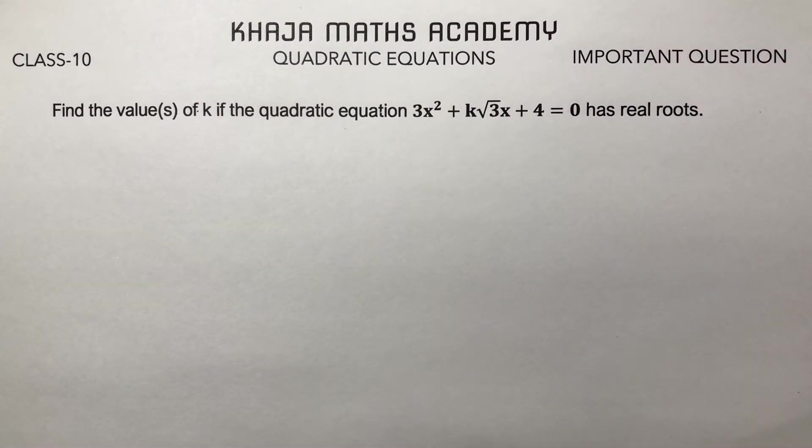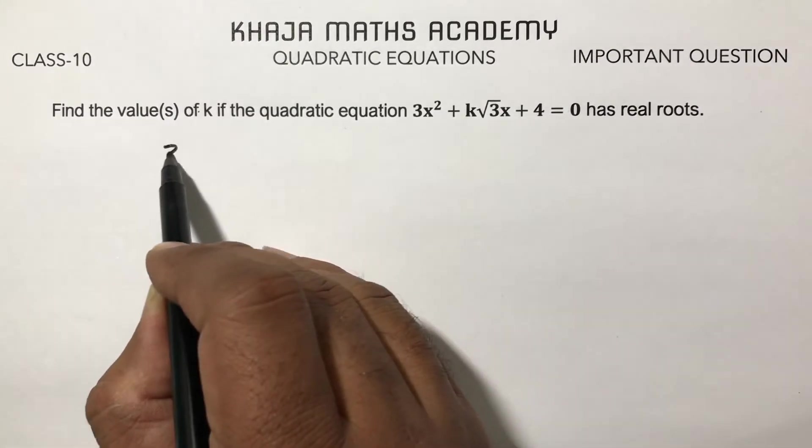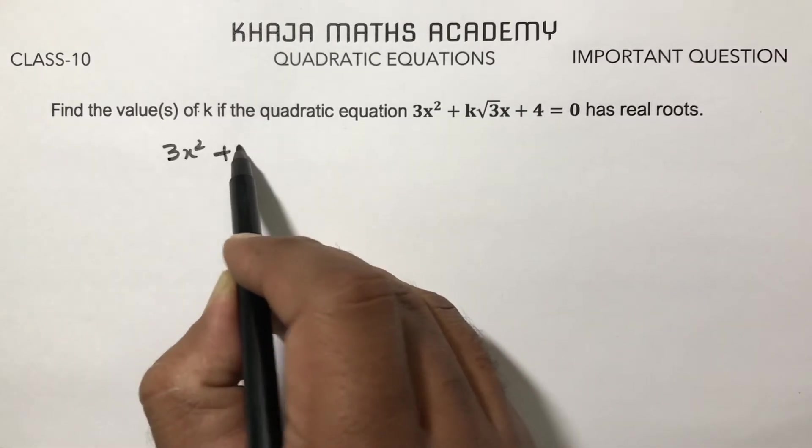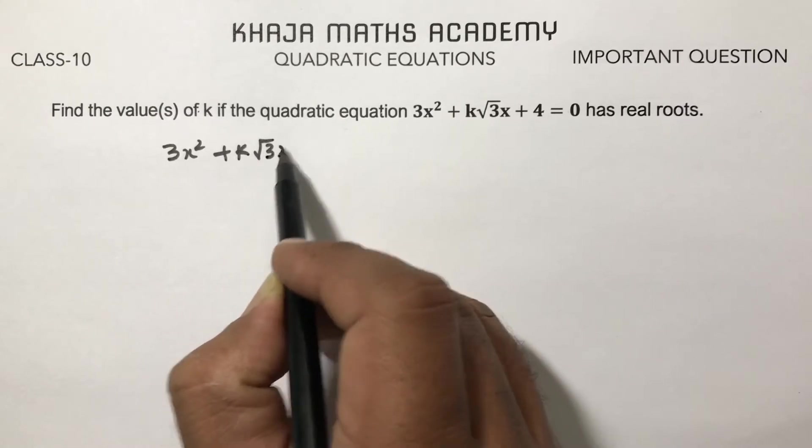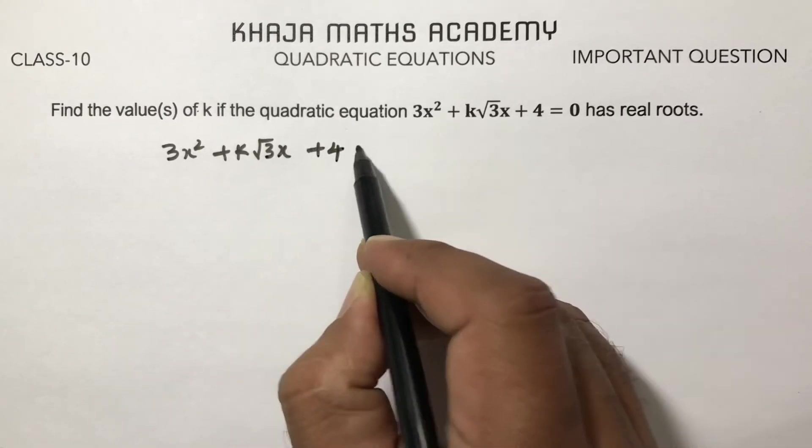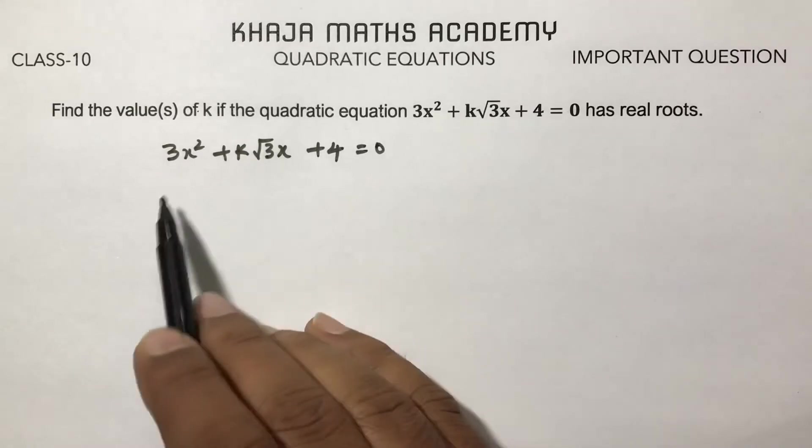Find the values of k if the quadratic equation has real roots. The quadratic equation is 3x² + k√3x + 4 = 0. This equation has real roots.